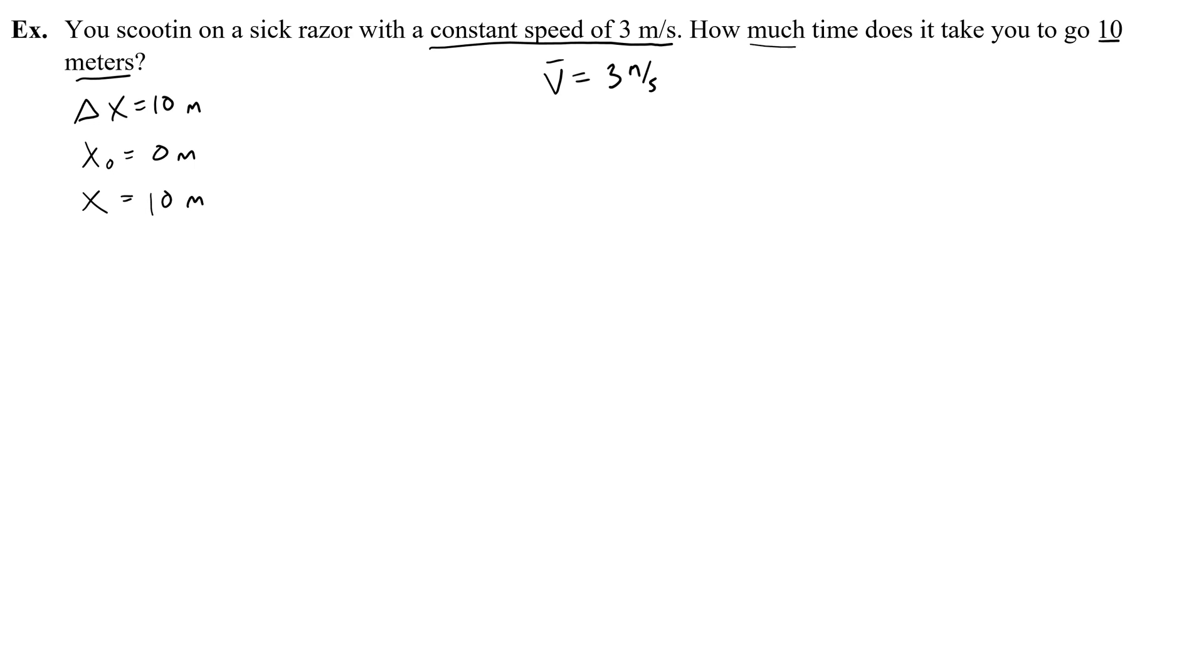Now, I already know my equation, because it's constant speed. There's only one equation. I don't even have to think about it. That is the equation. But I do need to solve it. So, let's get rid of things that are 0. The initial position is 0. And to solve for time, I need to divide both sides by the average velocity, because then the average velocity goes away. So time is x over v, or 10 meters over 3 meters per second. Meters cancel out. And I'm going to get 3.3 repeating. And 1 over 1 over seconds is the same thing as saying seconds. Voila, we solved the problem.